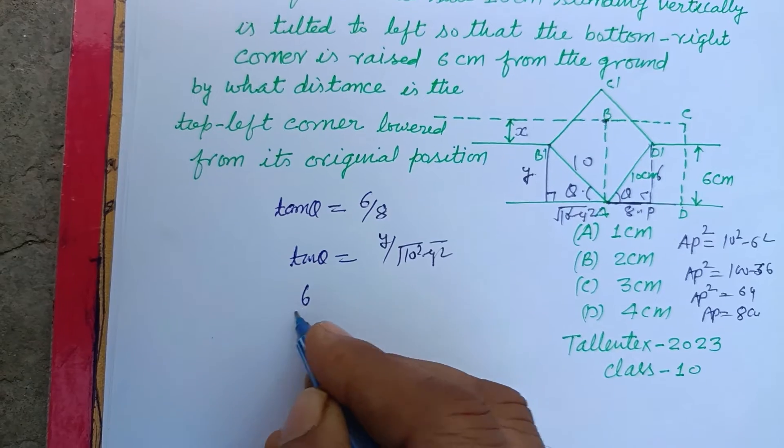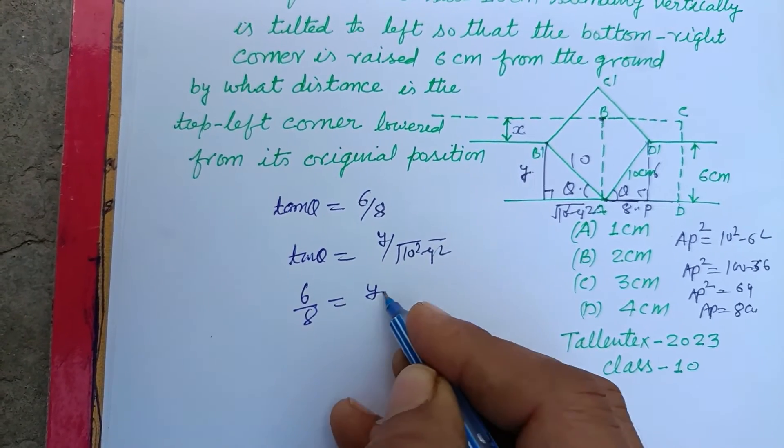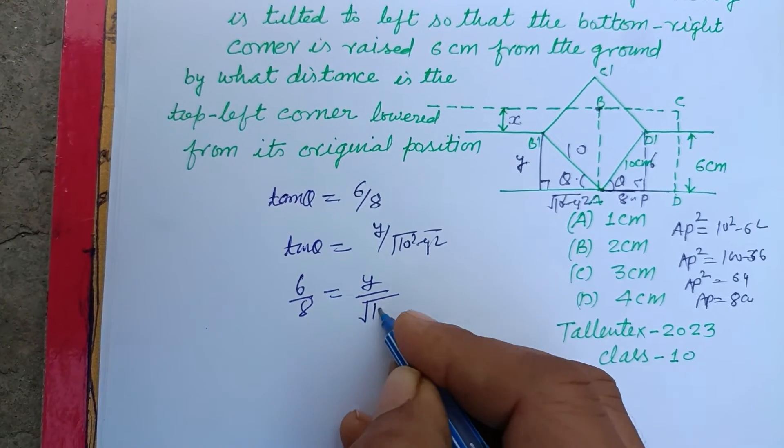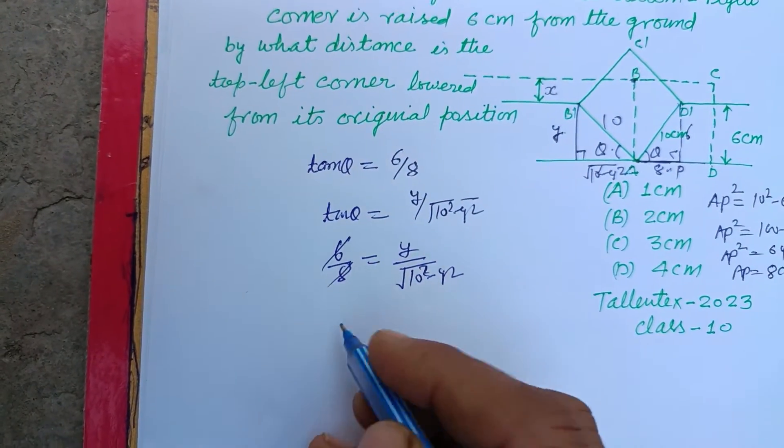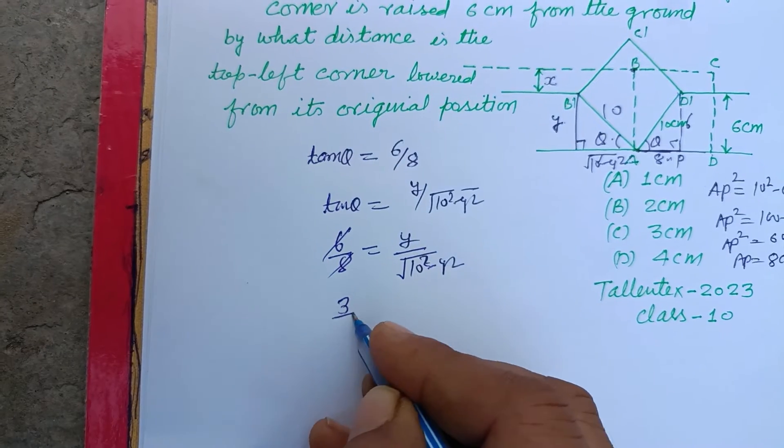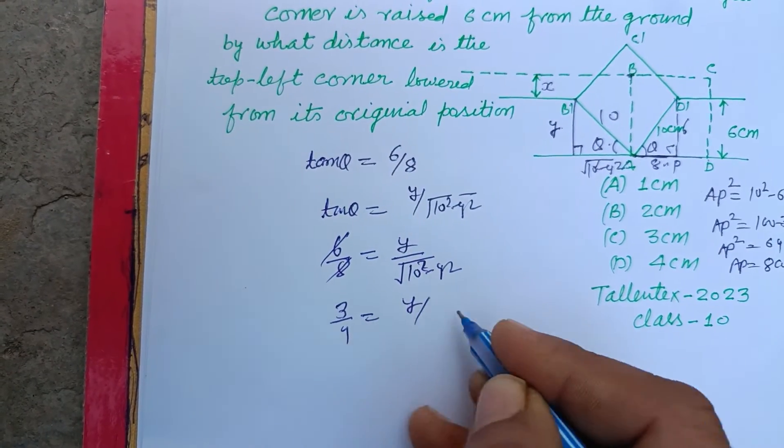So putting these equals: 6 upon 8 equals Y upon square root of 10 square minus Y square. Squaring, first we simplify: 3 by 4 equals Y over square root 10 square minus Y square.